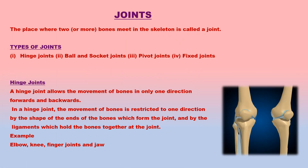The place where two or more bones meet in the skeleton is called a joint. Several types of joints occur in the human skeleton. Most joints allow the bones to move, and the amount of movement depends on the type of joint. The main types of joints in the human body are hinge joints, ball and socket joints, pivot joints, and fixed joints.